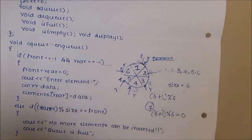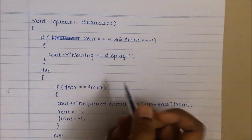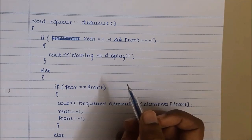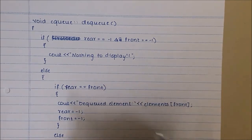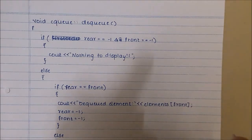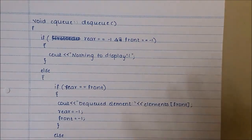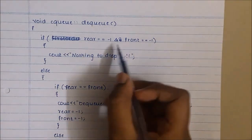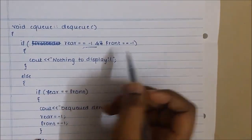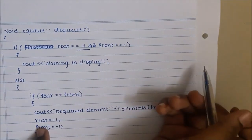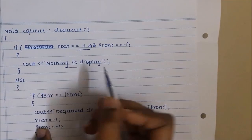To dequeue an element, we first check two conditions. If the queue is empty, there is no element that can be dequeued, so we print nothing to display. If there is only one element, that is the last element to be dequeued, and we must set front and rear to minus 1 to indicate the queue becomes empty after the dequeue operation.